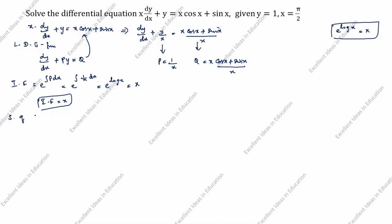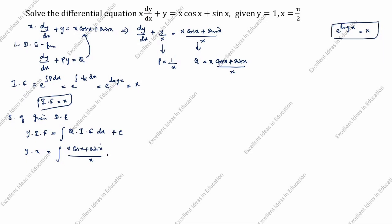The solution of the given differential equation is: y × (integrating factor) = ∫q × (integrating factor) dx + c. So y × x = ∫[(x cos x + sin x)/x] × x dx + c. This x and x cancel.